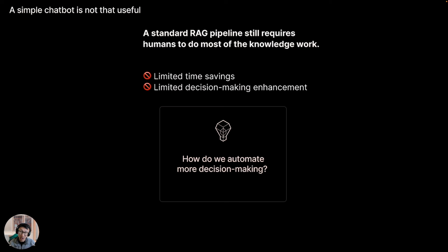We think there's limited time savings or decision making enhancement in giving the end user a basic search and retrieval tool. The potential for Gen AI or agentic applications is that you should be able to actually automate entire chunks of what the knowledge worker is able to produce — therefore letting them be not just one or two percent more efficient, but ten, fifty, even two to three hundred percent more efficient.